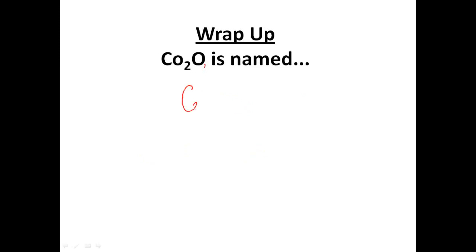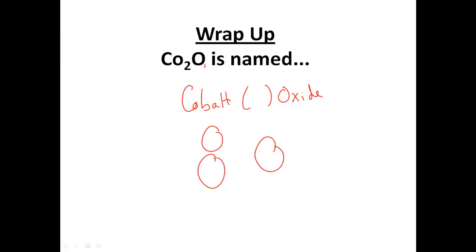The last example: I have two cobalt atoms and one oxygen — this will be cobalt something oxide. Oxygen has a 2− charge, giving a total negative of 2−. I need 2+ to balance that, distributed over two cobalt atoms, giving each a 1+ charge. So this is cobalt(I) oxide. That concludes today's lesson — we learned how to calculate the charge on cations with more than one charge, where they're located on the periodic table, and how to name ionic compounds involving variable charge cations.